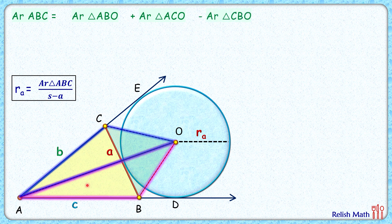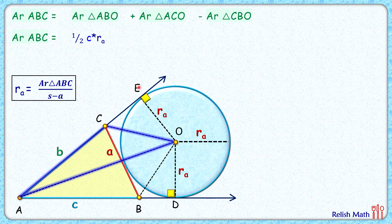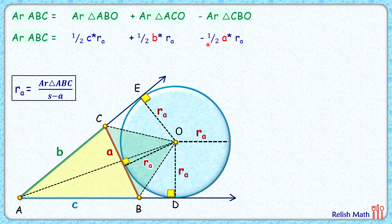For the area of the pink triangle, area is half of base times height. Taking c as the base, OD (the radius) will be the height, so area equals half of c times ra. For the blue triangle, taking AC as the base, OE (the radius) is the height, so it's plus half of b times ra. For the green triangle, taking a as the base, the radius is the height, so area is half of a times ra.